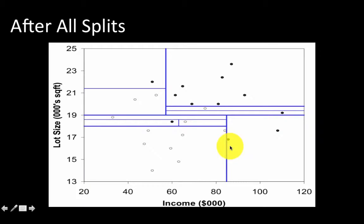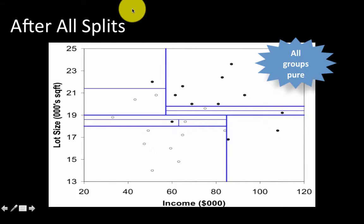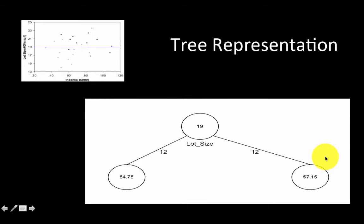The process continues, and if you really look at it, all the cases are pure. If you look at every single rectangular region, it has either all non-owners or all owners. So we can see clearly that corresponding to every split we chose, we can draw the tree part of it.